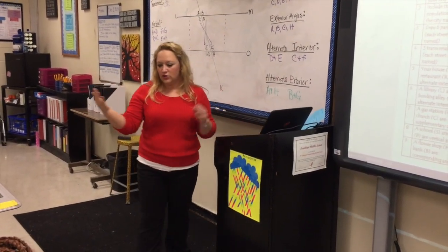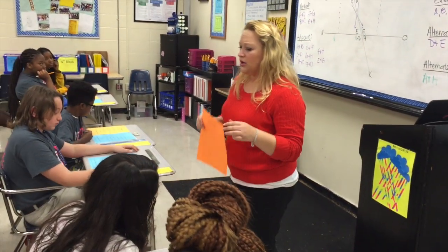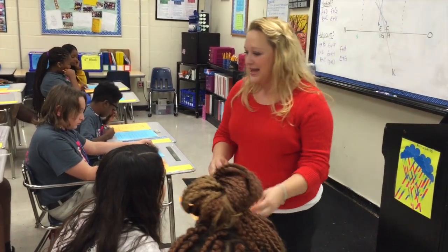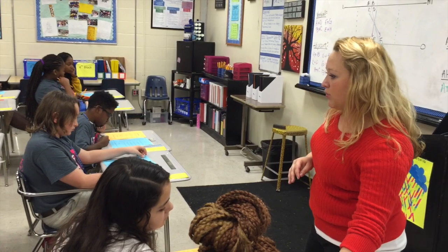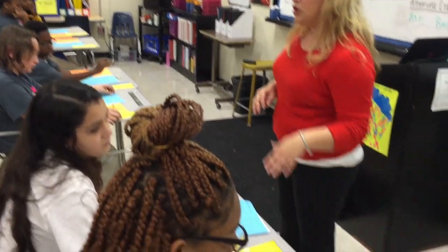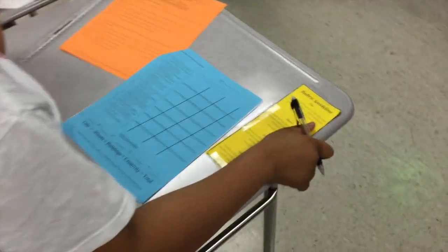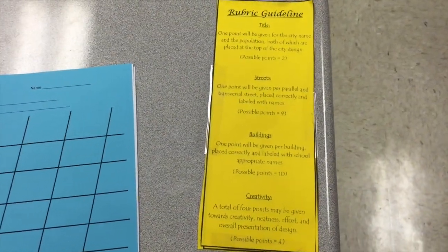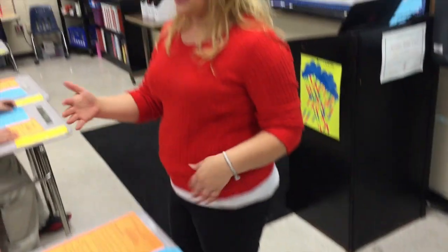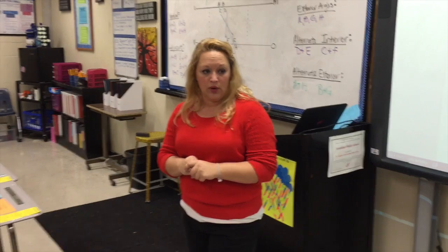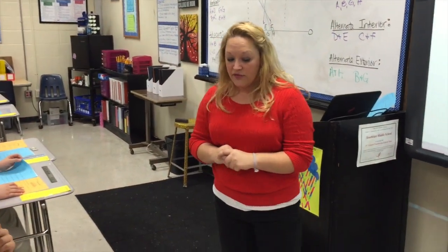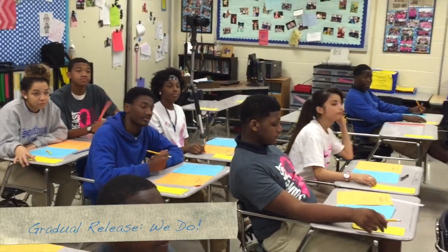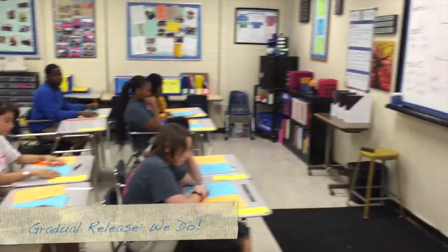If you look at your orange sheet, this tells you about our city project that we are going to plan — it gives you the details of exactly what you need. If you look at your yellow sheet, that is your rubric for today. It's very important that you understand this is worth 25 points, so if you have 25 points you get a hundred. We're going to do it together at first to make sure you understand what we're doing. The first thing — if you look at your example and I'm on board, there are already straight lines, so we're good to go.